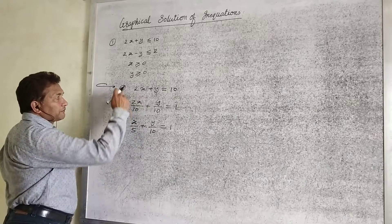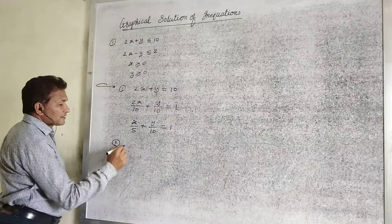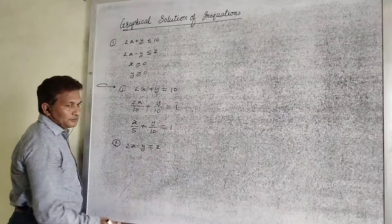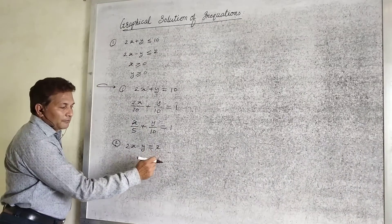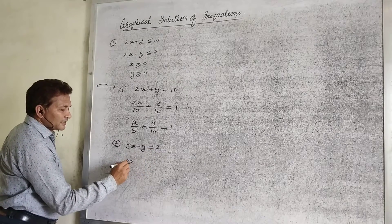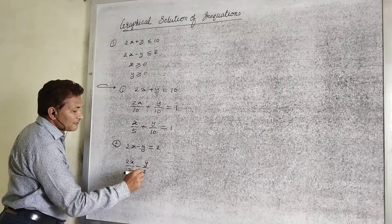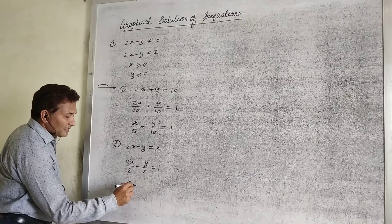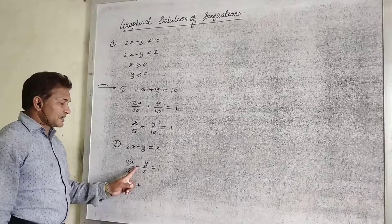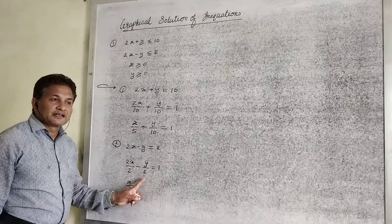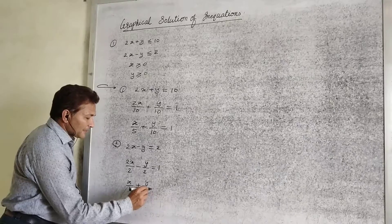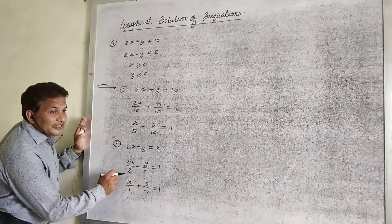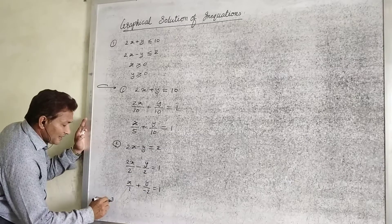Now we get 2 points for the first line. For the second equation, convert it into an equation: 2x minus y equal to 2. Dividing by 2, we get 2x divided by 2 minus y divided by 2 equal to 1. So x divided by 1 — now please remember, if there is a minus sign, the intercept will be negative — therefore y divided by minus 2 equal to 1. In this way we get the intercepts of the second line.